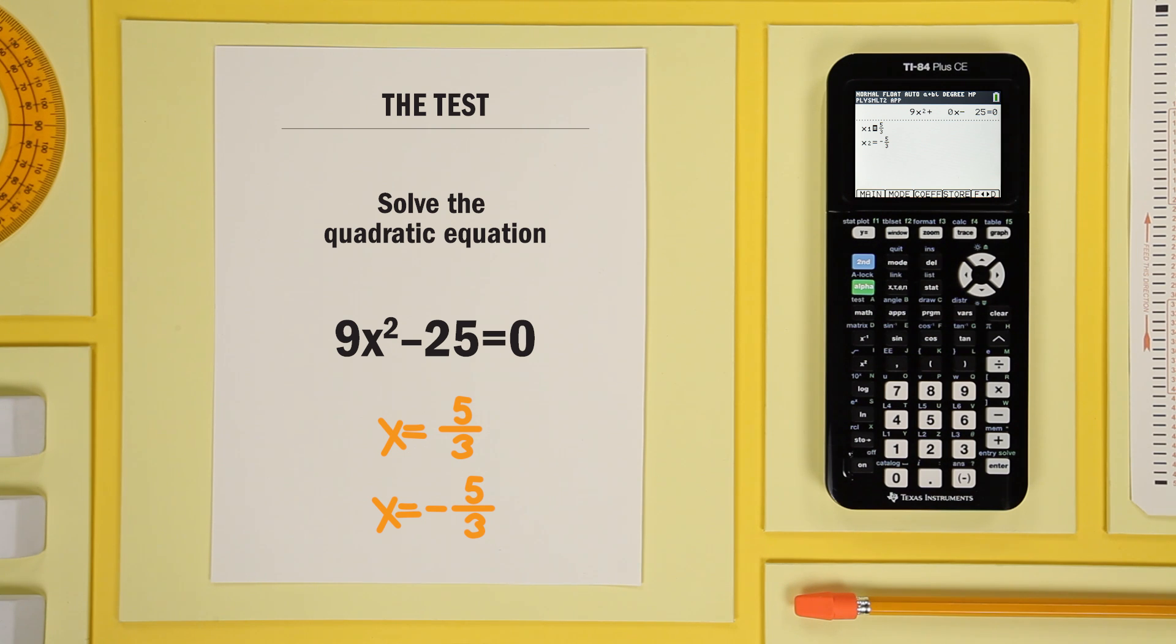Let's do one more. Solve x squared minus 4x plus 7 equals 0.